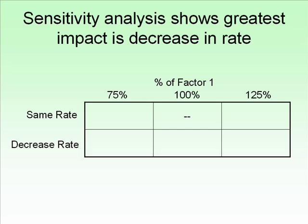What we've got is a matrix. Along the top we're going to change factor one — 100% means base case, we can change it either by 25% lower or 25% higher. On the side we've got what happens if we change the rate. If we keep the rate the same and change factor one: at 75% of factor one, the present value goes down by 10%; if we increase factor one by 25%, the present value goes up by 9%.